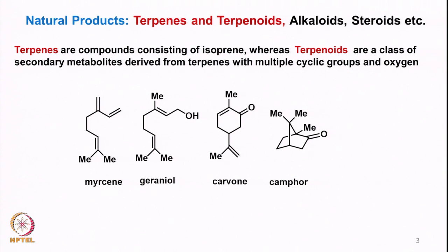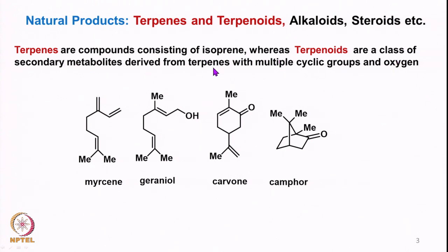Now if you look at natural products, you know many of them already — terpenes, terpenoids, alkaloids, steroids and many more. Terpenes are compounds that consist of isoprene units, whereas terpenoids are a class of secondary metabolites which are derived from terpenes and have some cyclic groups and oxygen.